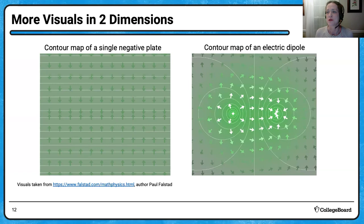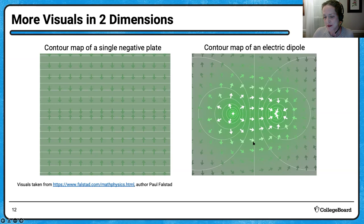Here's another image — this is a positive charge with field vectors leaving it, and a negative charge with electric field vectors concluding on it. Somewhere in between, there is zero electric field. Think back to the first animation: somewhere between the mountain and valley, we're at sea level, so to speak.